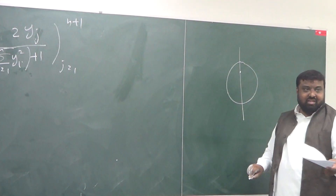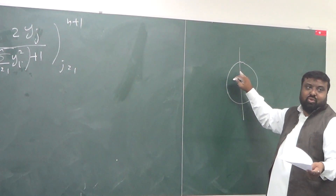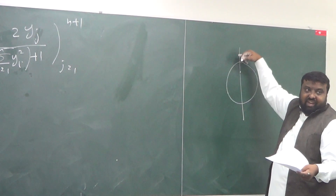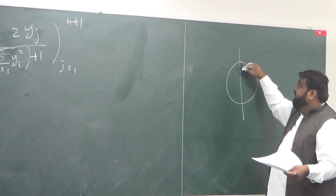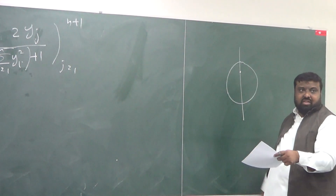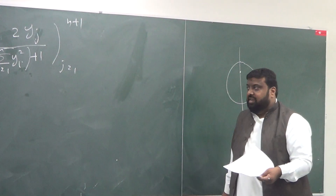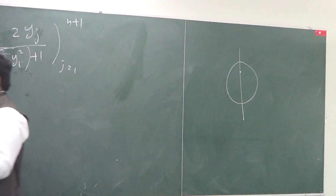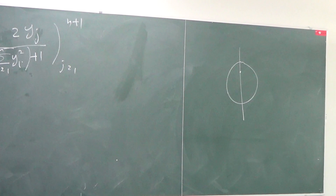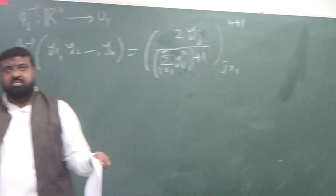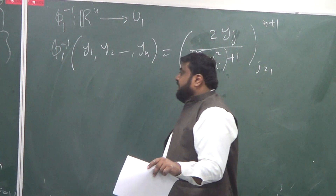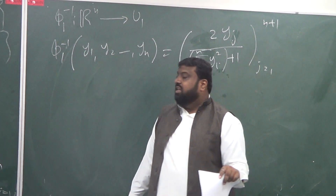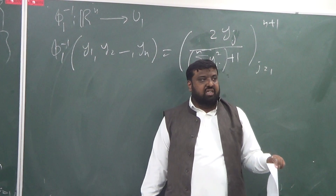If I take a point on the sphere, it's going to have height less than 1 at x_{n+1}. If I allow x_{n+1} to be any point in R^{n+1}, that would be a troublemaking point. But since it must lie on the sphere, that's fine — it's enough to remove just that one point. So what we can see is that φ1 and φ1 inverse are essentially both continuous.